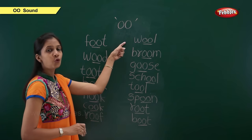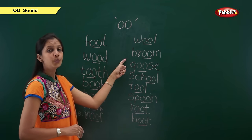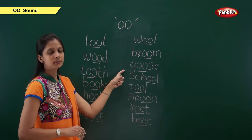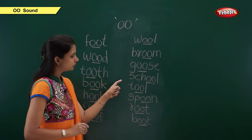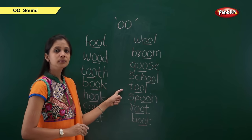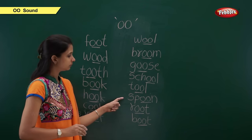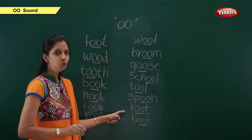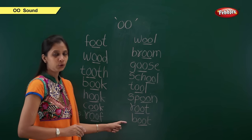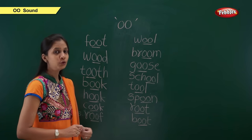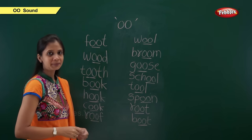Now we will repeat the long OO sound words. Wool. Broom. Goose. School. Tool. Spoon. Root. Mood. Here we have to remember the short OO sound and the long OO sound.